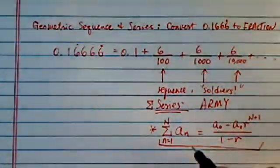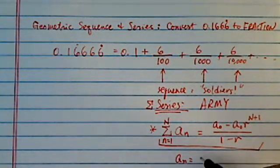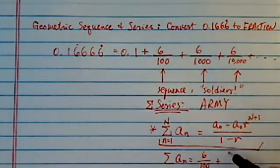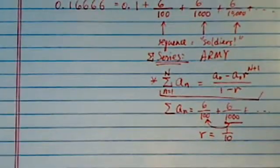So in our sequence here, we have An equal to A0, which is 6 over 100, and then the summation of An is 6 over 100 plus 6 over 1000 plus so on and so forth. So our R, when you grab the second term, divide by the first term, you'll have 1 over 10.